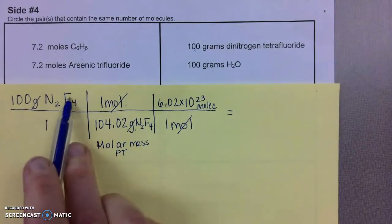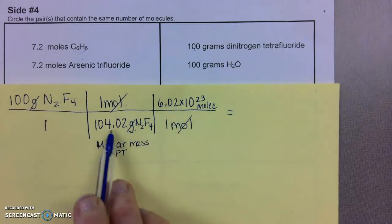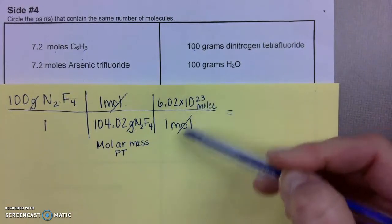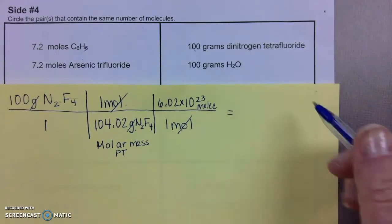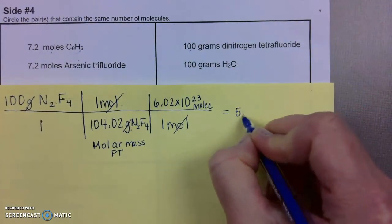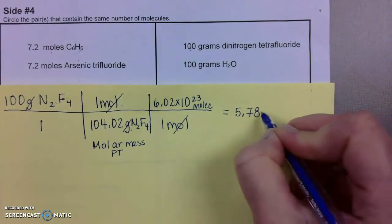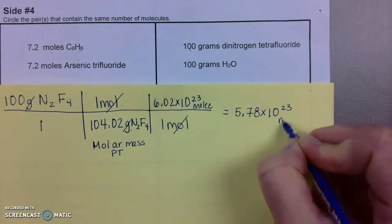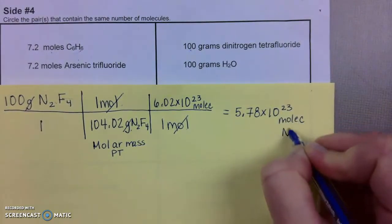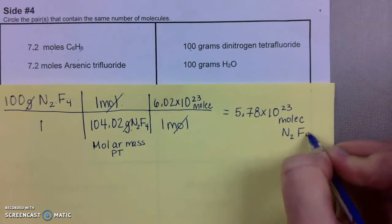To calculate this, we multiply everything on top, multiply everything on the bottom, and we divide the two answers. When we divide the two answers, we get 5.78 times 10 to the 23rd molecules of N2F4.